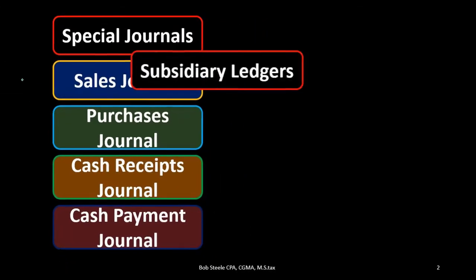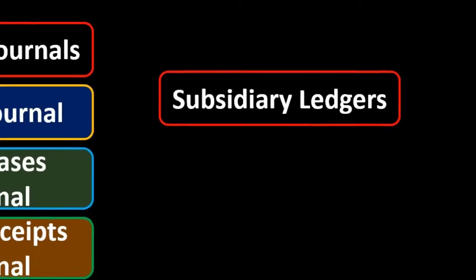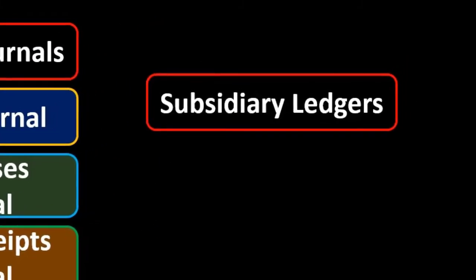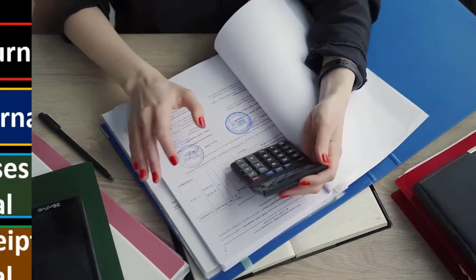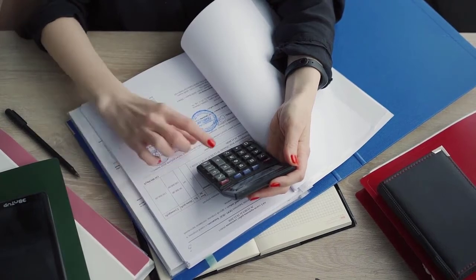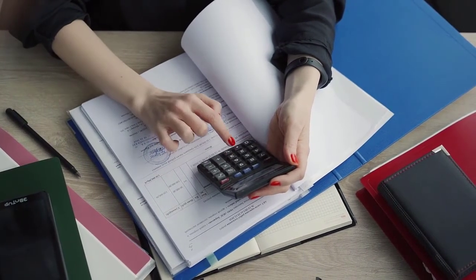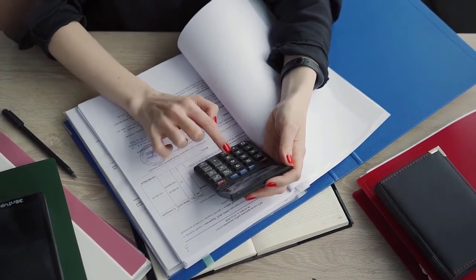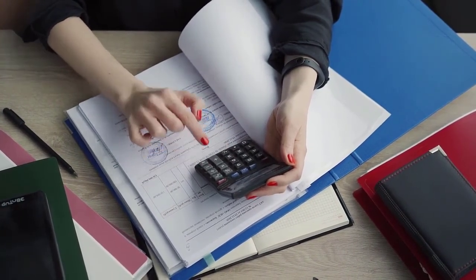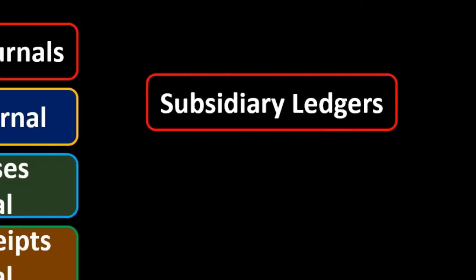We also want to take a look at the subsidiary ledgers. These are going to be used anytime an account needs some added detail that's not given by its controlling account — typically the general ledger account — then we want something like a subsidiary ledger.